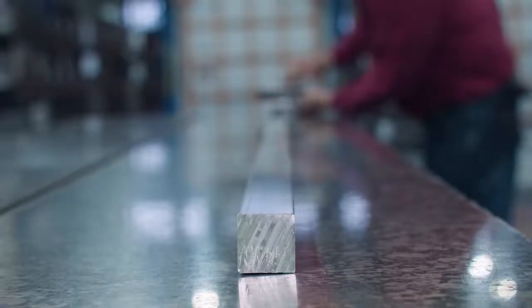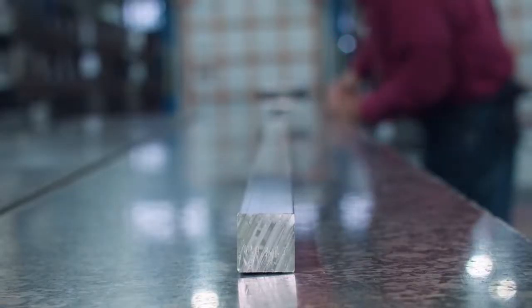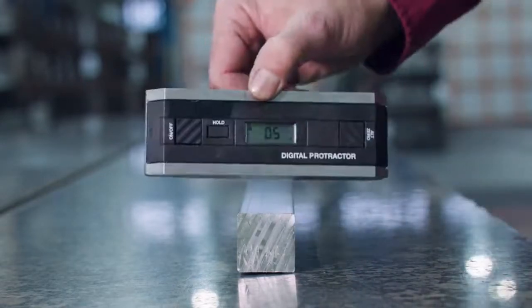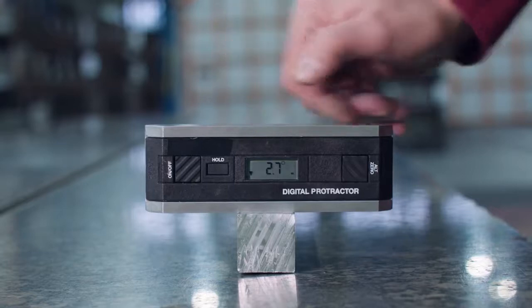You can also use a digital protractor for this measurement by placing the protractor on one end, zeroing, and then place the protractor on the opposite end of the profile to determine the degrees of twist.